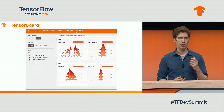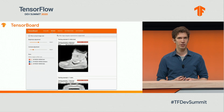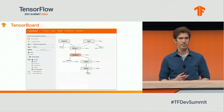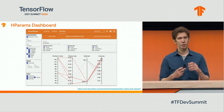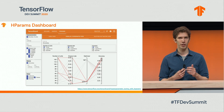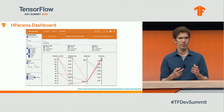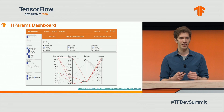TensorBoard lets you track metrics, visualize your model, explore model parameters, view your embeddings, and a lot more. We're consistently adding new capabilities to it. Last year, we launched the HParams dashboard to help visualize hyperparameter-tuning results, which can help you identify which hyperparameters are most promising for further exploration.